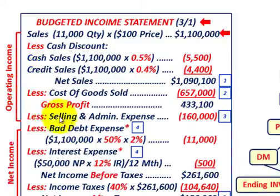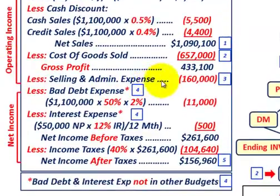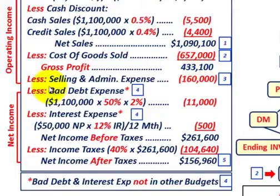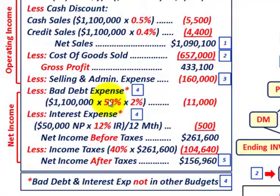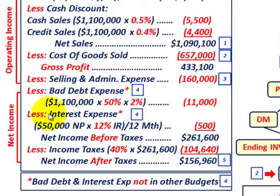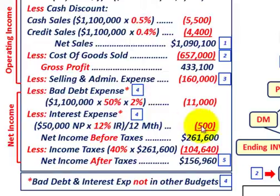Below the selling and administrative expenses, we get into net income items. We subtract bad debt expense: 50% of total sales for the period times 2% comes to $11,000. We also subtract interest expense — on a $50,000 note payable at 12% per year divided by 12 months — which equals $500 per month.